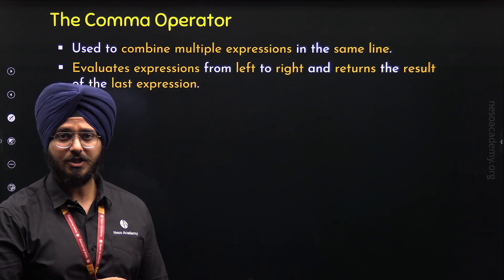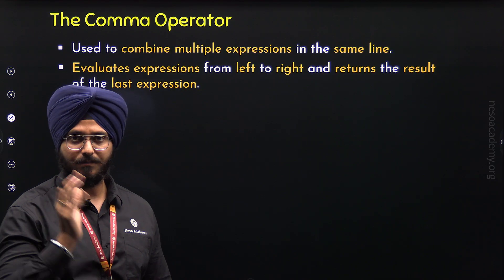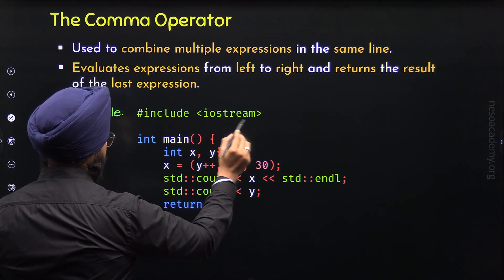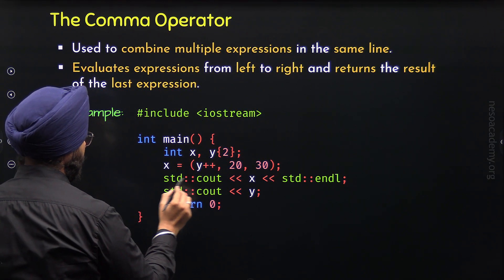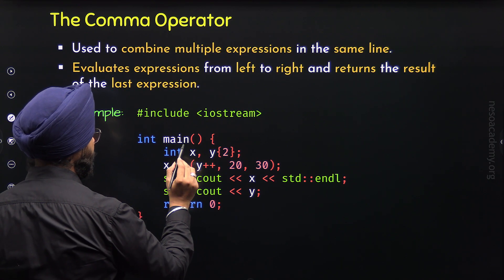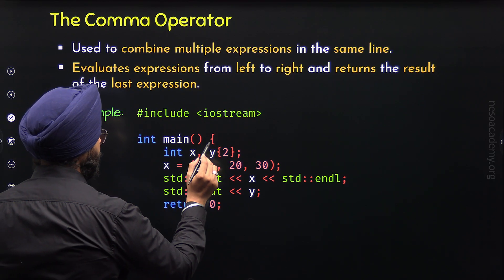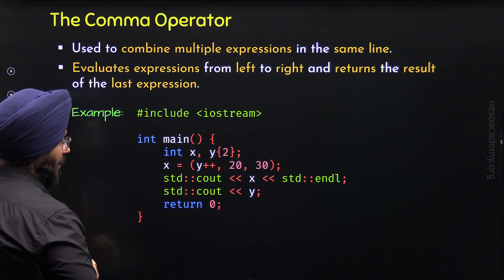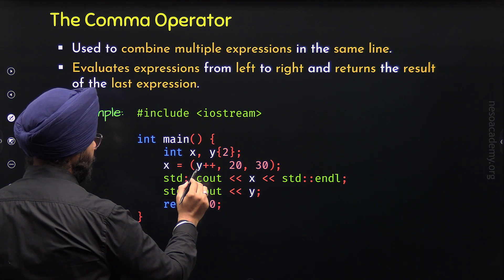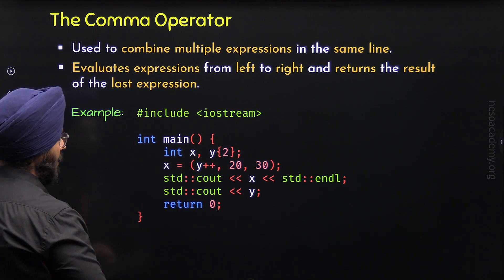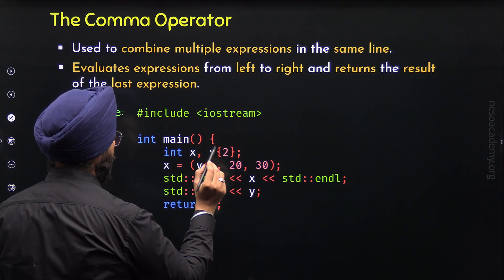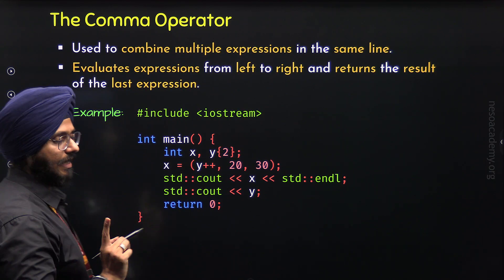To understand this better, let's take one simple example program. Here I have included the iostream header file because in the main function I am using std::cout. Inside the main function, I have defined two variables x and y. Variable y is initialized to 2. After this, we have the line: x = (y++, 20, 30). Here I am trying to store the result of (y++, 20, 30) in variable x.